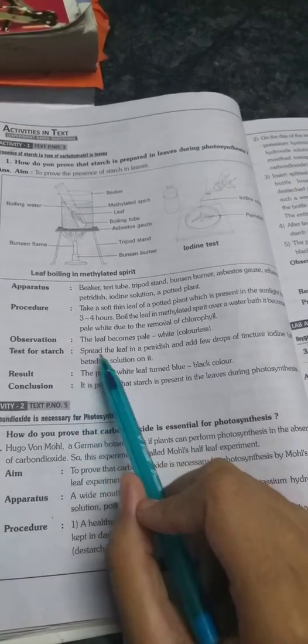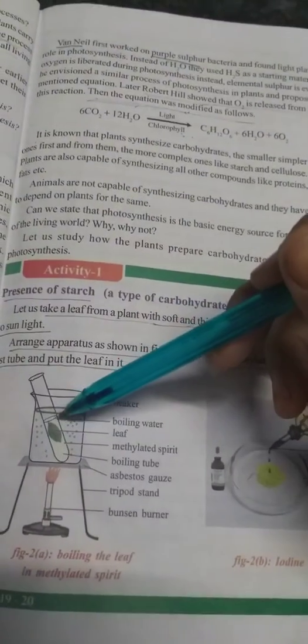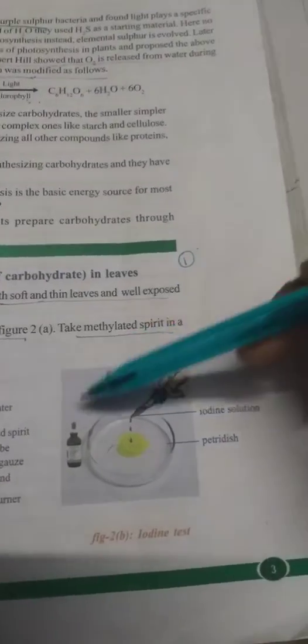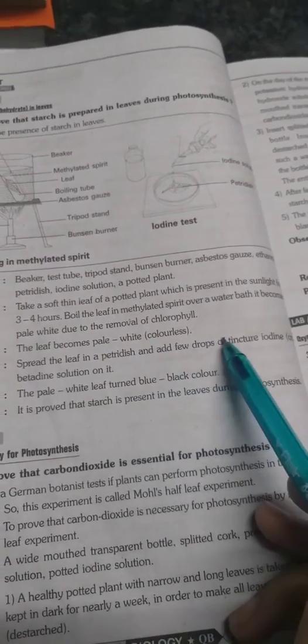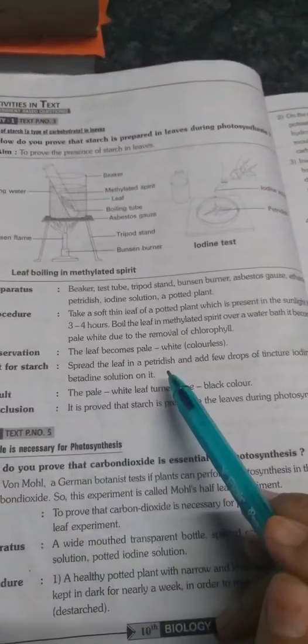As I said, you also require a petri dish. So this leaf, when it turns white, we'll transfer this leaf to a petri dish. And on that petri dish, what are we doing? We are adding a few drops of tincture iodine or bitter iodine solution on it.